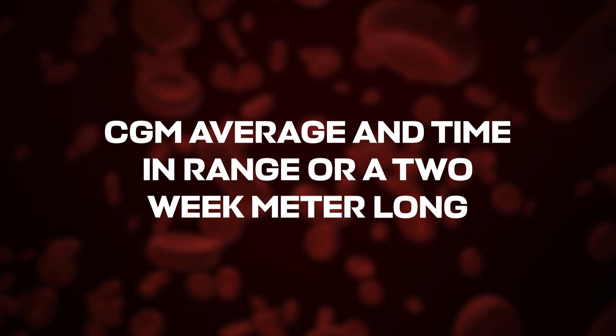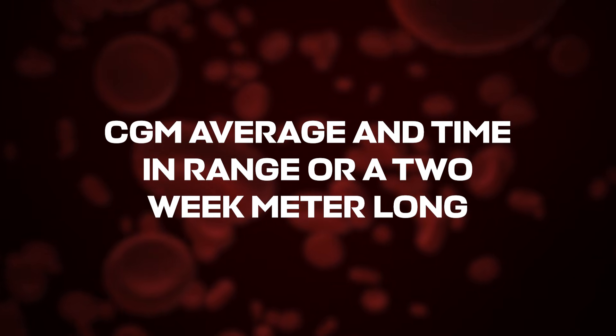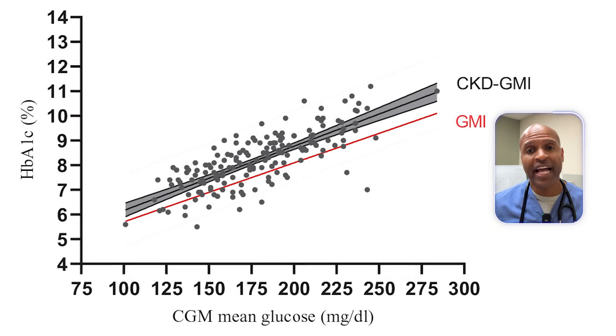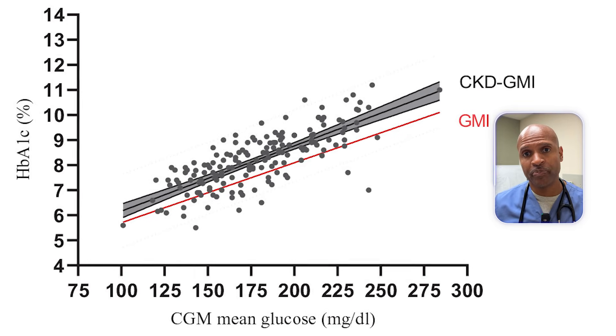Now let's translate this into what you can do this week. Start by gathering your truth — CGM average and time in range, or a 2-week meter log. Compute your GMI or let your app do it. Compare GMI to lab A1C. If they don't match, add fructosamine or glycated albumin. If A1C is the odd one out while the other markers look great, use the normalization idea to explain the mismatch and stay the course.